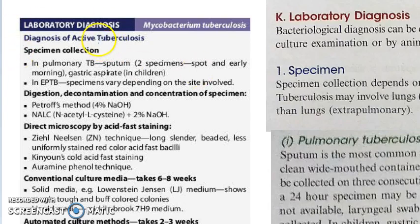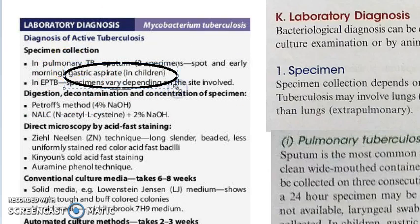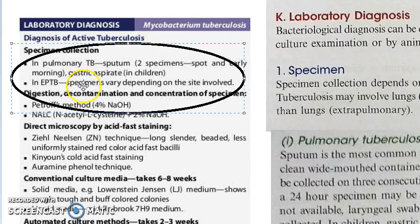Whenever they ask you a lab diagnosis, you will first describe specimen collection. What will the specimen be? Here they have asked you about pulmonary tuberculosis, so you will collect sputum — two specimens: one spot sputum and one early morning sputum collected the next day. But for children, because they swallow sputum, you cannot collect sputum; hence you will have to take gastric aspirate.